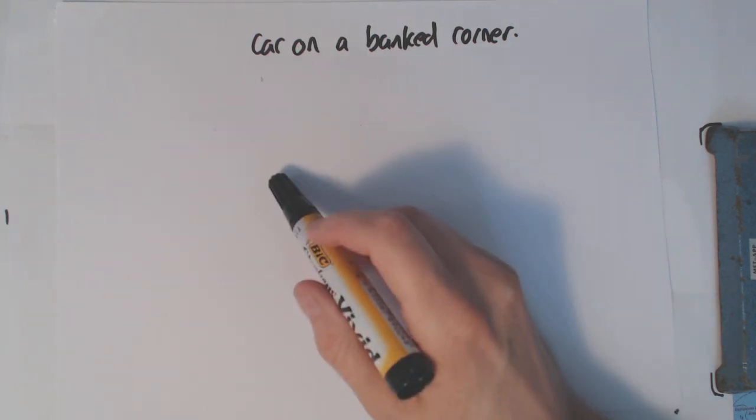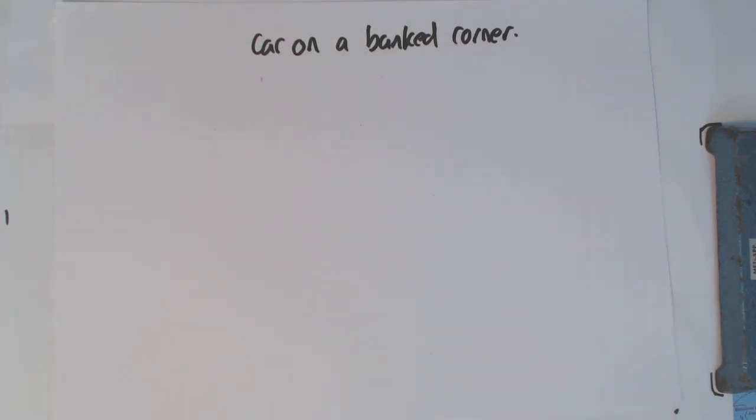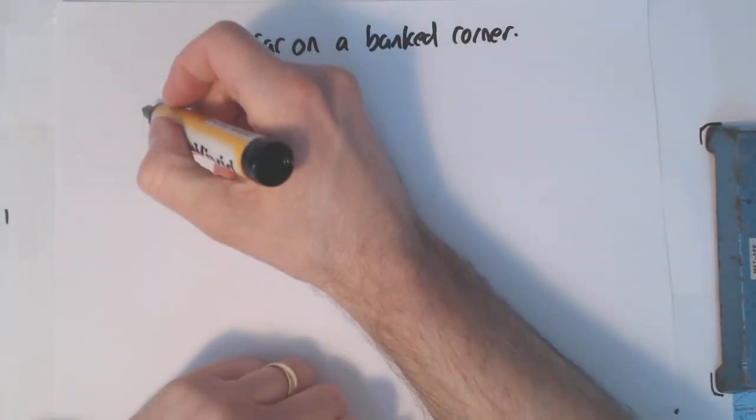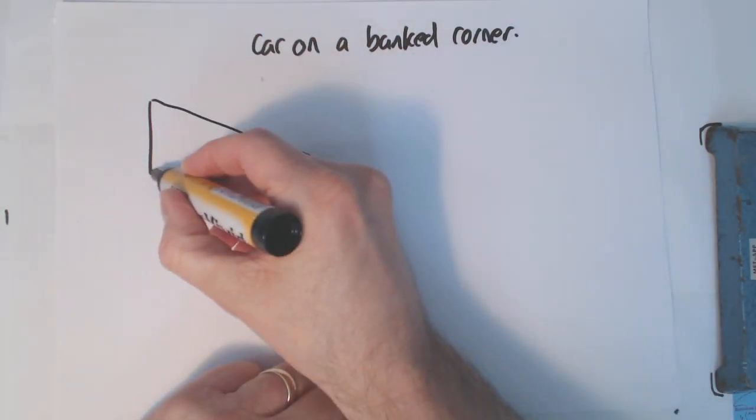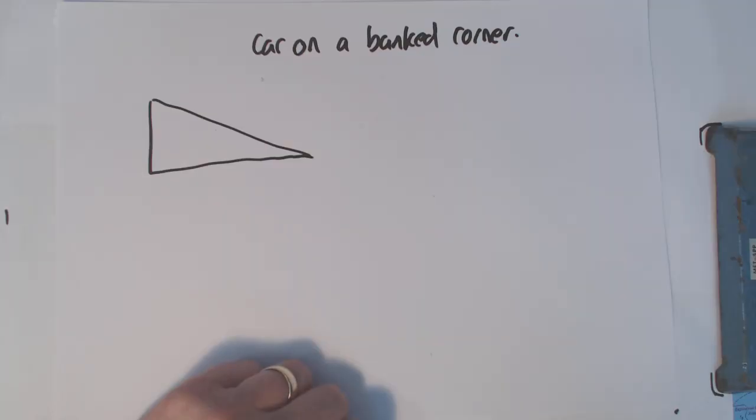Alright, what I want to look at here is a car on a banked corner. This one's going to end up, believe it or not, having a similar formula to the one we did for the conical pendulum.